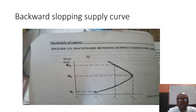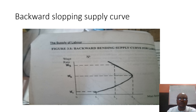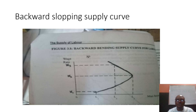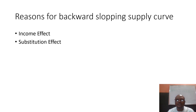However, when the wage rate increases further to W3, at that point the individual values leisure more than income. So instead of supplying additional hours beyond L2 up to L3, they reduce their hour supply to a position behind L2. That is what accounts for the backward-sloping supply curve. The explanation is offered through two effects — income effect and substitution effect — which will be explained in our next class.